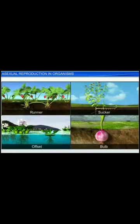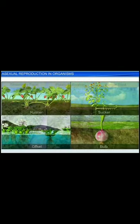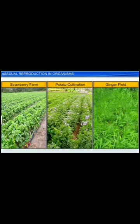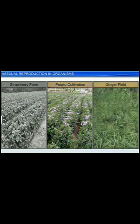Apart from buds and nodes, runners, suckers, offsets, and bulbs are other examples of vegetative propagules in plants. Interestingly, farmers and gardeners make full use of vegetative propagation for commercial cultivation of various plants, including strawberry, potatoes, and ginger.